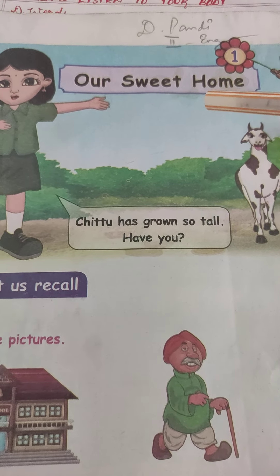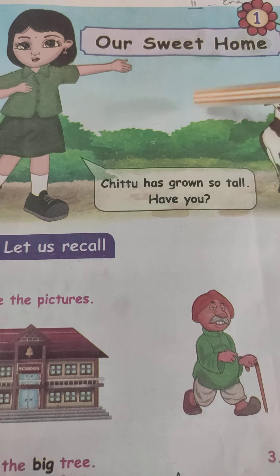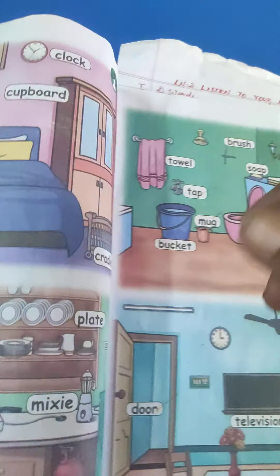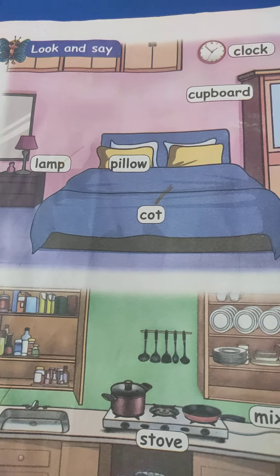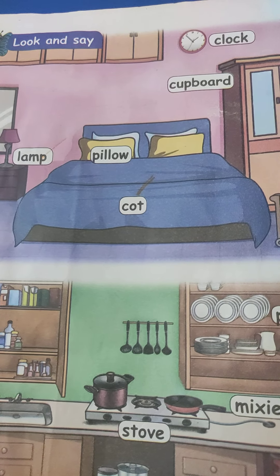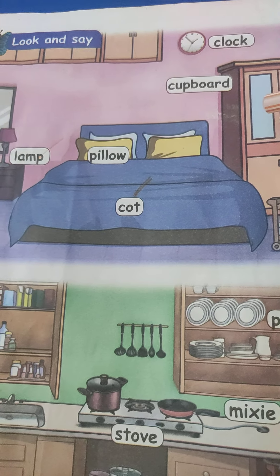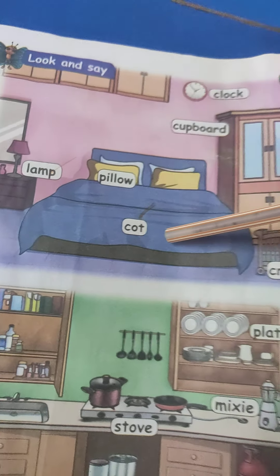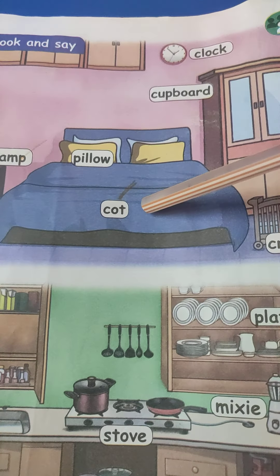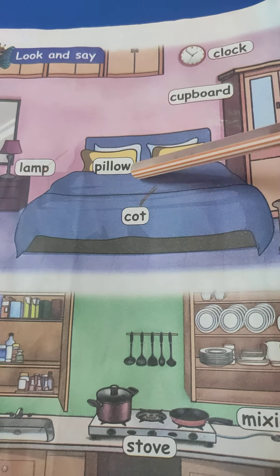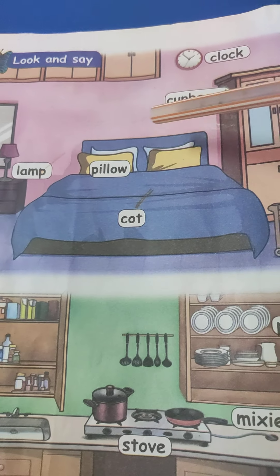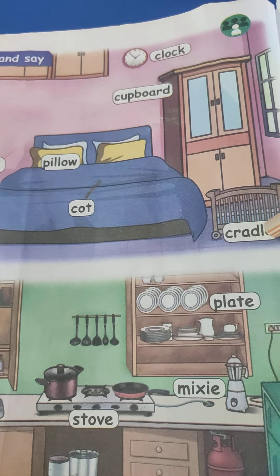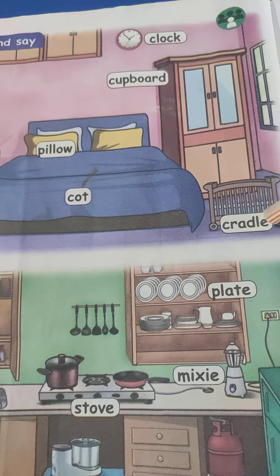The topic of the lesson is Our Sweet Home. In our home we have so many rooms. First we can see the hall, the bedroom. In the bedroom we can see the cot, pillow, lamp, cupboard and clock. Cradle is also there.